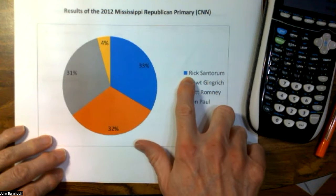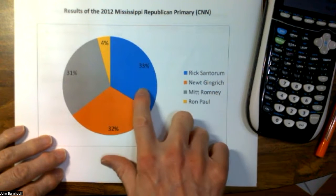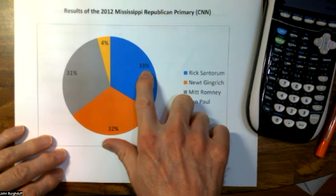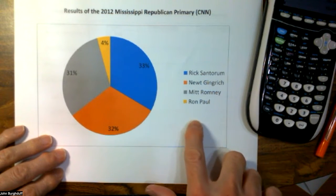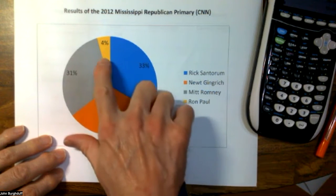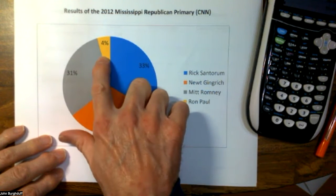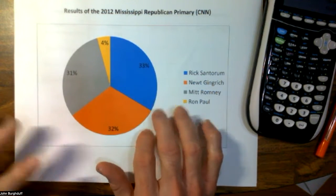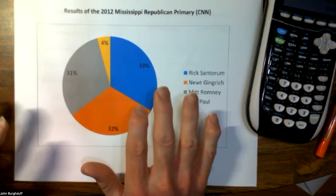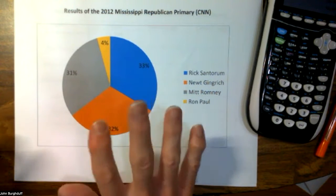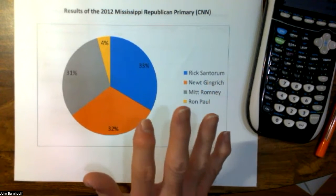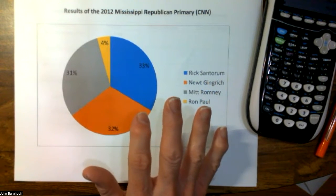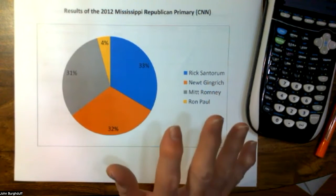It's all color coordinated. Rick Santorum is the blue area — he got 33% of the vote. Ron Paul is the yellow area — he got 4%, and so forth. This pie chart was created using Excel, and in fact any statistical software package will create a pie chart for you, no problem whatsoever.